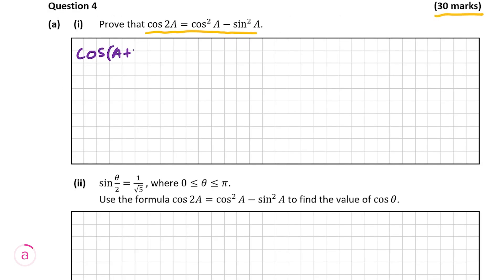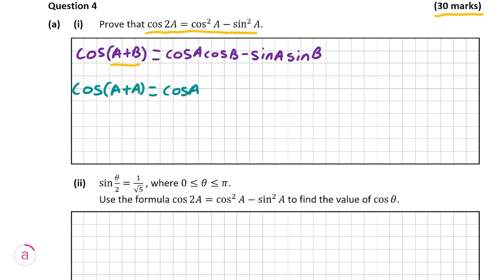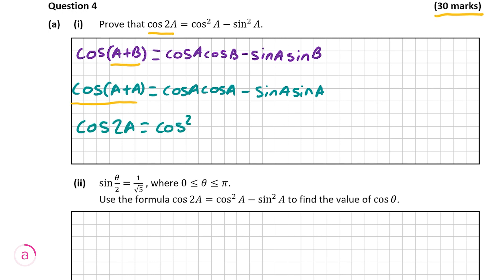As you can see in purple, I've written down our formula from the logbook. Instead of putting a plus b into this formula, I'm going to put a plus a. So on the left hand side we have cosine of a plus a, which is just cosine of 2a. On the right hand side, cosine a times cosine a is cosine squared of a, minus sine a times sine a which is sine squared of a. After simplifying, we have exactly what we needed to prove, giving us the full 10 marks.